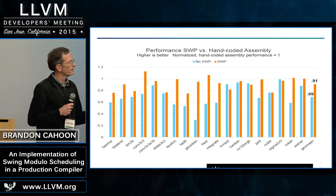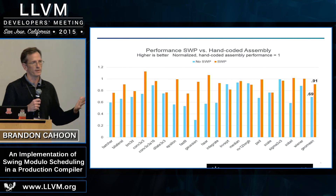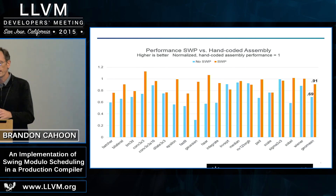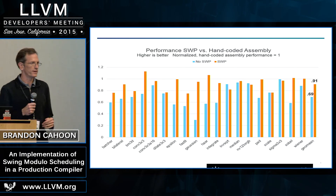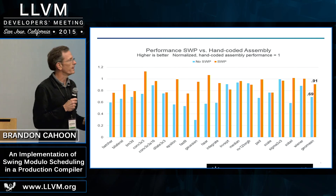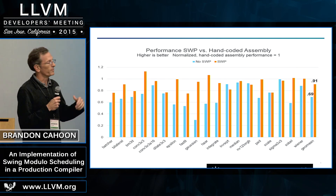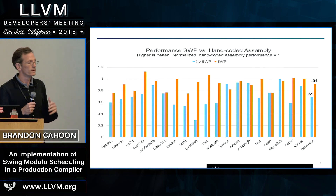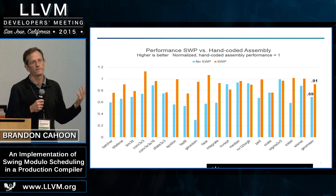These are some of the performance results. This is a set of image processing kernels where we have an assembly version that someone has software pipelined by hand, and a C version which has not been software pipelined. We compare the C version to the assembly version, normalized to one. The blue bar is performance without software pipelining, and the orange bar is performance with software pipelining. Without software pipelining, we achieve about 70% of the performance of the hand-tuned assembly code. With software pipelining on, we improve performance by about 20% and achieve 91% of the performance of the hand-coded assembly. So for Hexagon, and I think in general for VLIW architectures, software pipelining is really a necessary optimization and has proven to be very effective for us. Thank you.